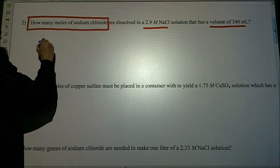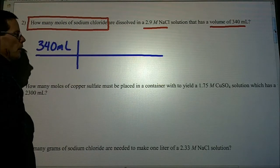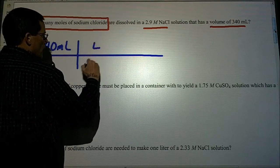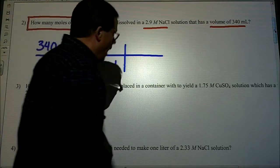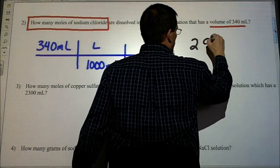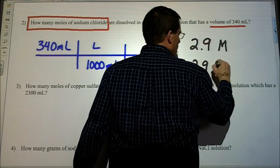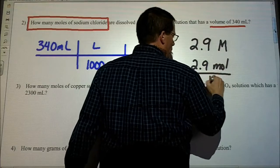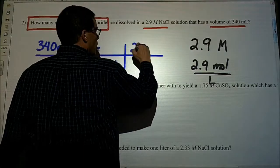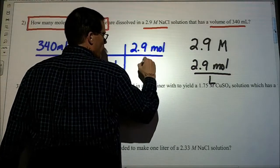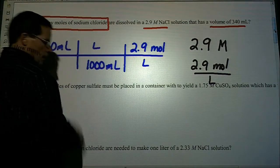We'll take our 340 milliliters and we will convert the milliliters into liters. Don't forget, 2.9 molar simply means that if you have 2.9 molar, that equals 2.9 moles for every liter of solution that you have. When we plug it into our factor label, we'll go 2.9 moles for every liter.